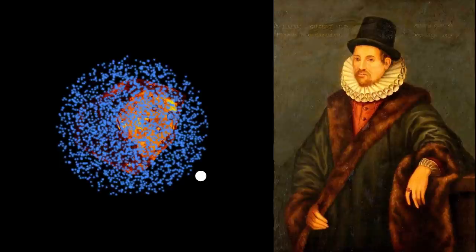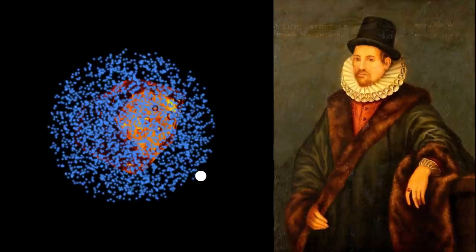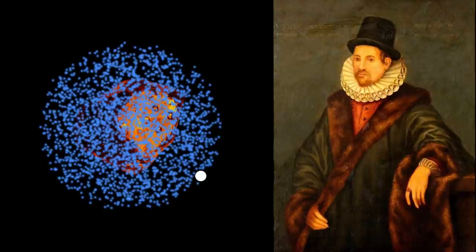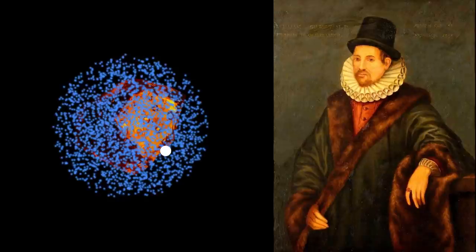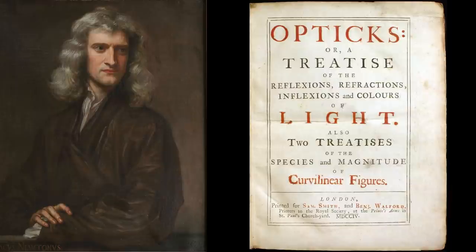He called this the effluvia and remarked that it must be very attenuated, for its emissions cannot be detected by the sensors. He also did not believe in action at a distance and felt that matter cannot act where it is not. The electric force was therefore carried by this effluvia, which would spread out and interact with other bodies near it. Gilbert felt that the electric emanations from a body would later return to it.